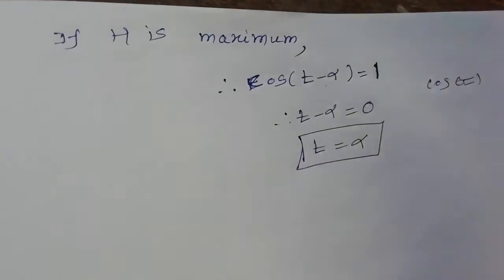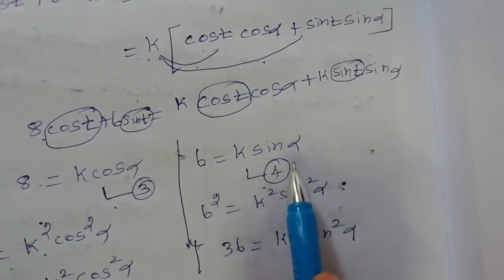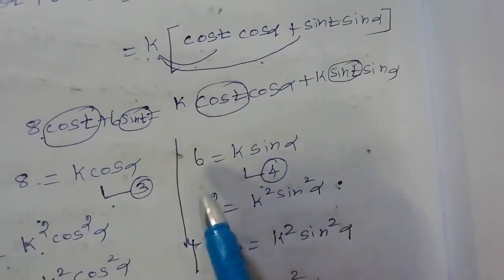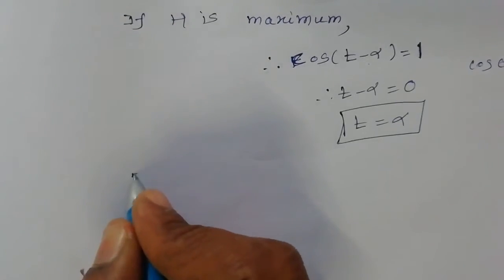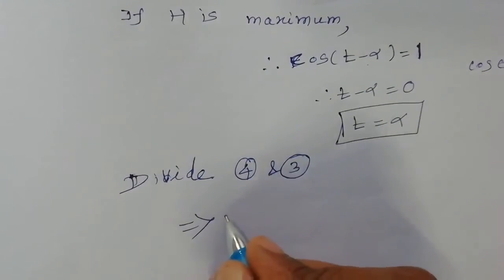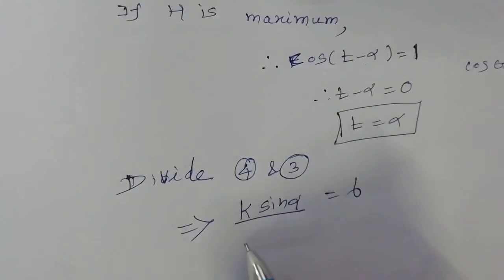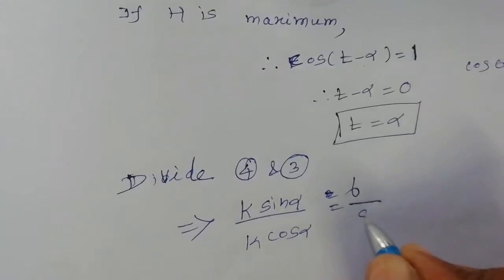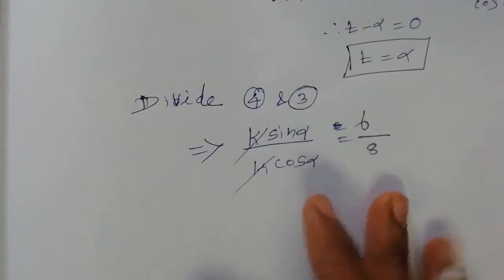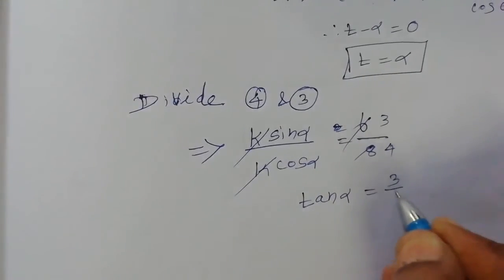Now t value find out. Third and fourth equation, divide both to get tan alpha. Equation 4 divided by 3. Fourth equation is k sin alpha equal to 6 divided by third equation k cos alpha is equal to 8. Divide, k cancels, sin alpha by cos alpha equal to tan alpha, equals 3 by 4.